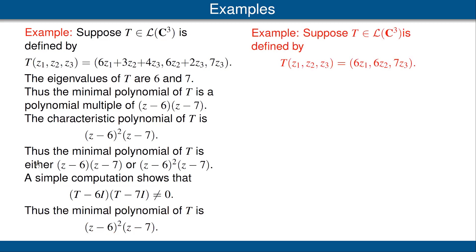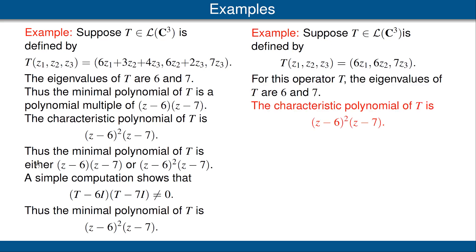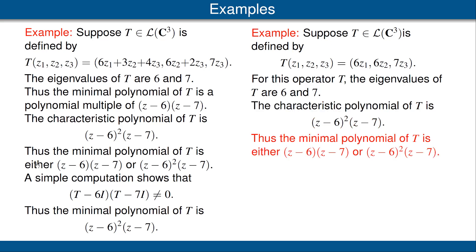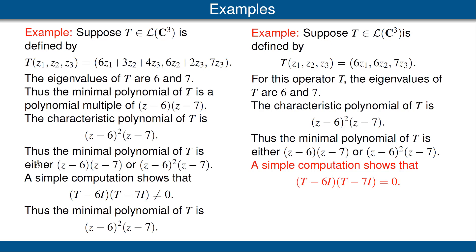Let's look at a different operator. Define T on C³ by the equation shown here. The eigenvalues are again 6 and 7, and the characteristic polynomial is again (z−6)²(z−7). As before, the minimal polynomial is either (z−6)(z−7) or (z−6)²(z−7). In this case, a simple computation shows that (T−6I)(T−7I) = 0. Thus the minimal polynomial of T is (z−6)(z−7), which differs from the characteristic polynomial.